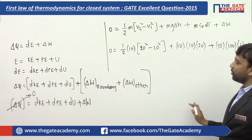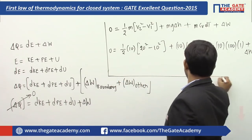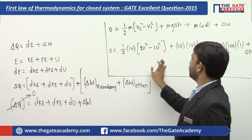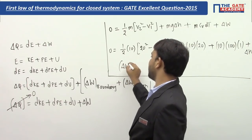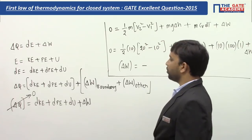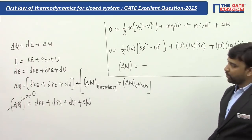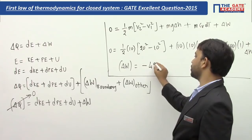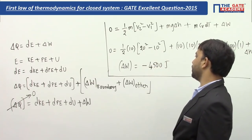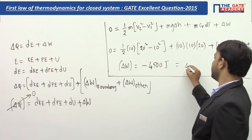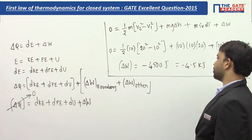Simplifying, the net work interaction comes out to be a negative quantity: −4500 joules, or equivalently −4.5 kilojoules.